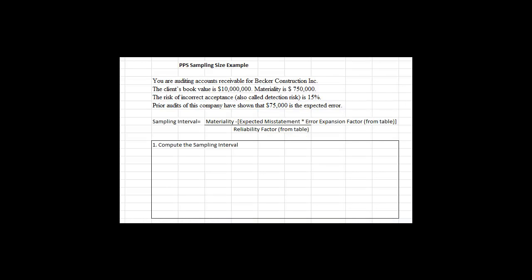This is the problem we're going to solve in this example. It's available to you in D2L. You are auditing accounts receivable for Becker Construction. The client's book value is $10 million and materiality is $750,000. The point of this sample is to identify the number and which subsidiary balances will be confirmed with accounts receivable confirmation letters.